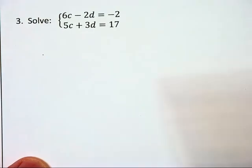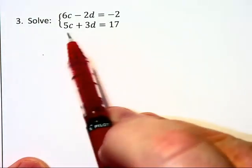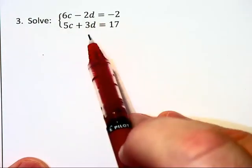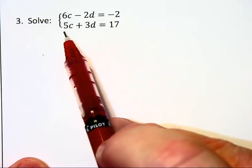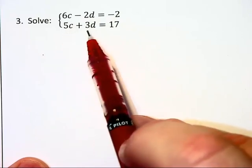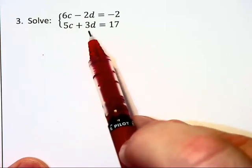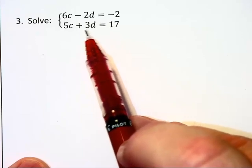In this next problem, again, I can't eliminate the variables easily just by adding down. 6 and 5 both go into 30. 2 and 3 both go into 6. And I'd rather keep my numbers smaller. So I'm going to create coefficients of 6d in each equation.